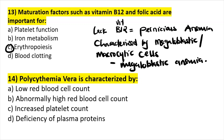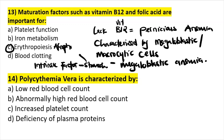Vitamin B12 is absorbed by the intestines using a factor called intrinsic factor, which is produced by the stomach. In a case where the stomach is removed or atrophies — a condition called atrophic gastritis — intrinsic factor decreases, leading to vitamin B12 deficiency, which leads to pernicious anemia.